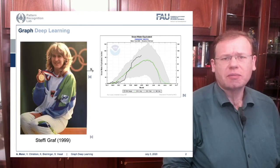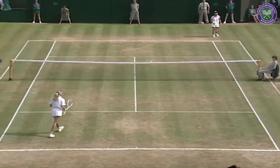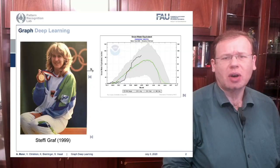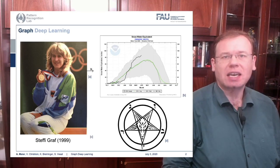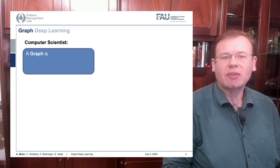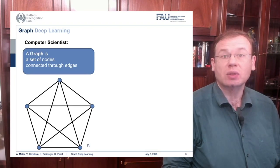So is it Steffi Graf? No, we are also not talking about Steffi Graf. What we actually want to look at are diagrams that can be connected with different nodes and edges. A computer scientist thinks of a graph as a set of nodes connected through edges — this is the kind of graph we want to talk about today.